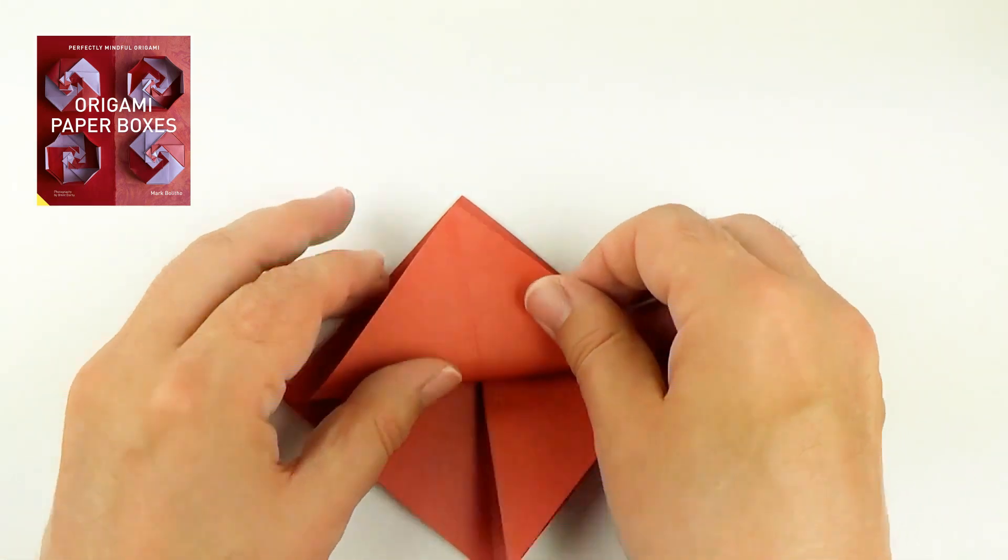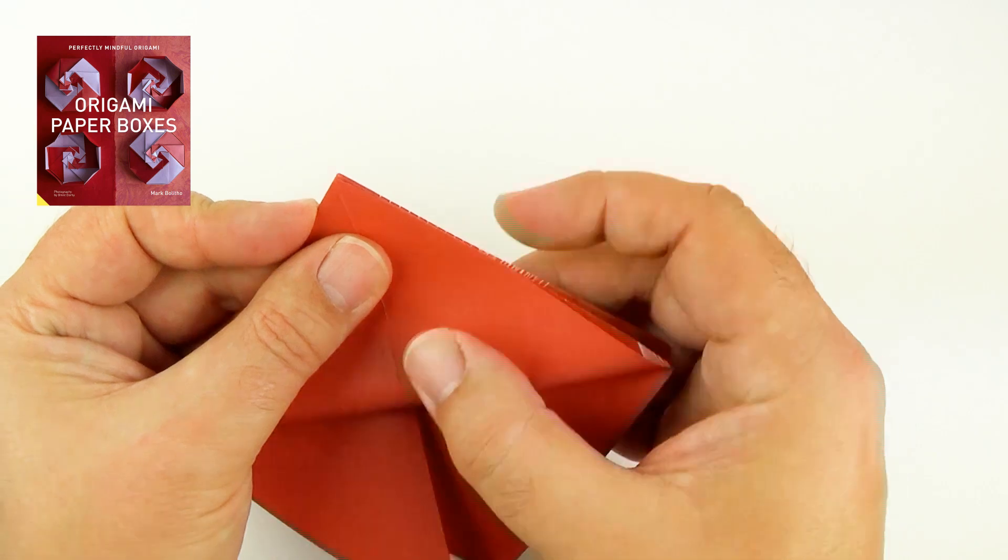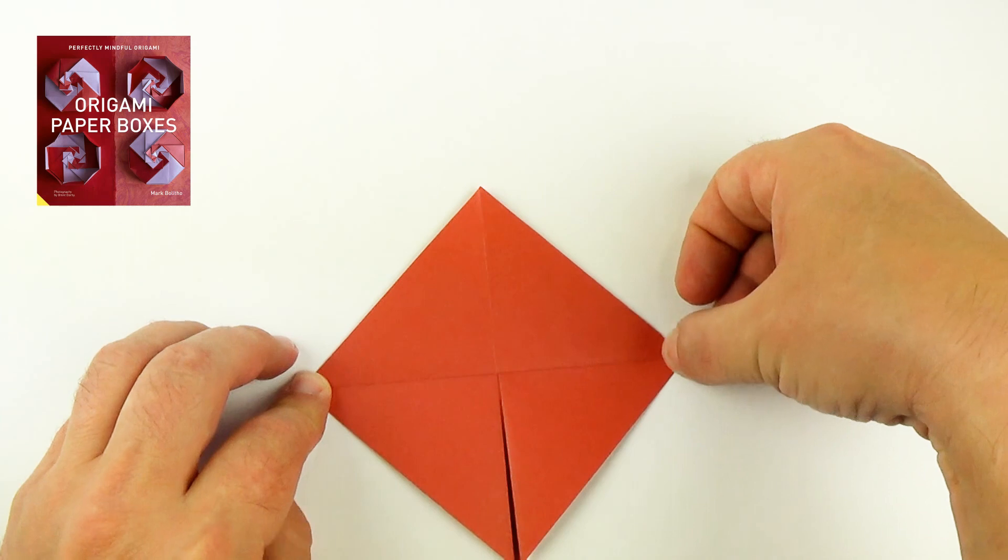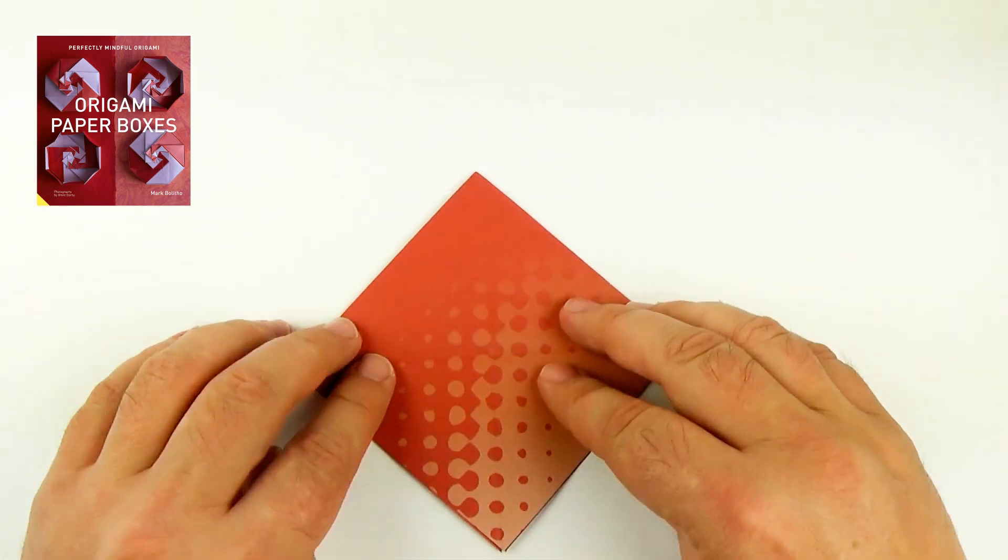Now I'll take the front layer and fold that up to the top. So I'm putting a crease in along the middle. And unfold.